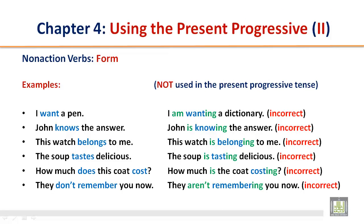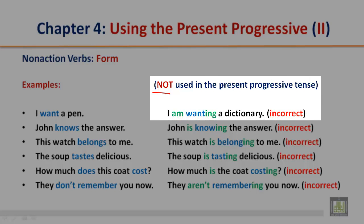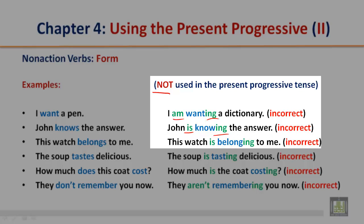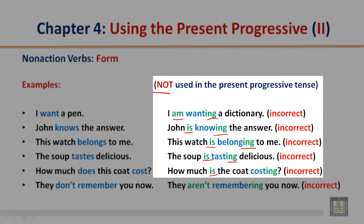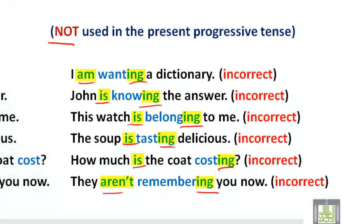The following examples are incorrect because they use non-action verbs in the present progressive tense: I am wanting a dictionary. John is knowing the answer. This watch is belonging to me. The soup is tasting delicious. How much is the coat costing? They aren't remembering you now. Please take note of the items in green — they change the sentences, making them incorrect.